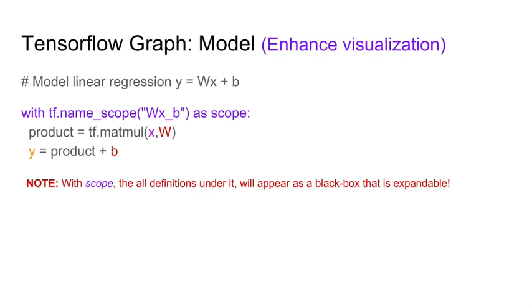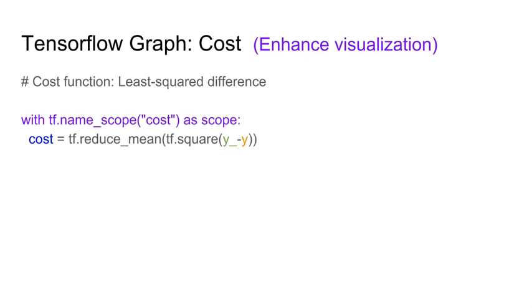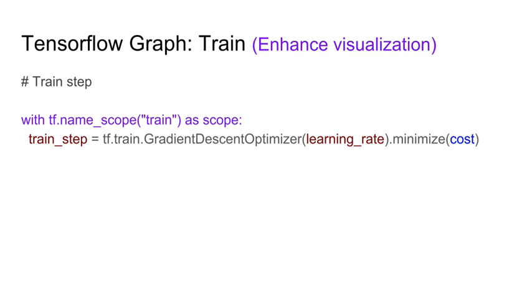Next, we are ready to model our linear regression y equals Wx plus b. When we model it, we define it under a scope called 'wx_b'. With scopes, all these definitions will appear as a black box during visualization, enabling us to visualize complex graphs easily. We also define the cost under a scope called 'cost', and the train step under a scope named 'train'. With that, we have fully defined our linear regression model in TensorFlow.